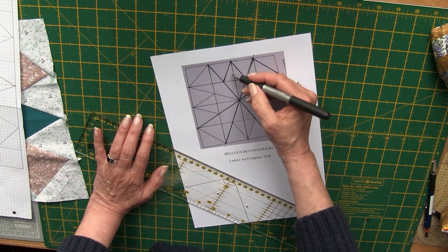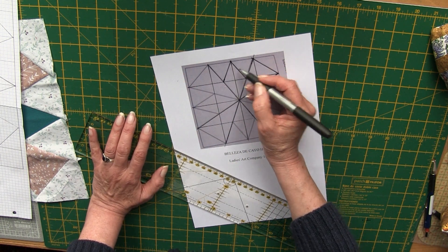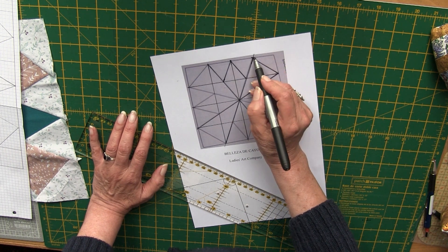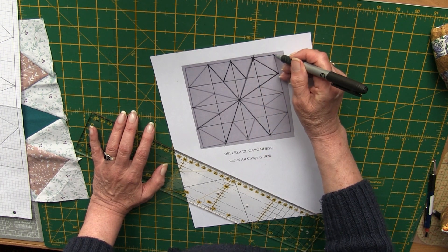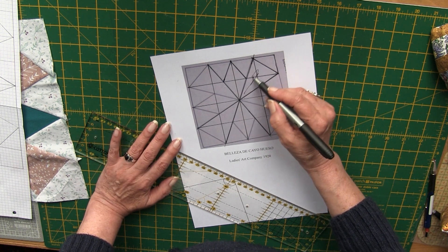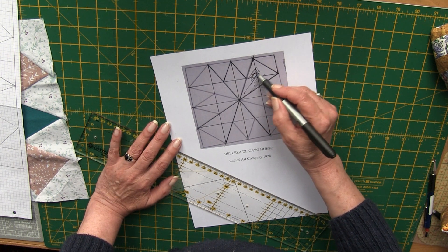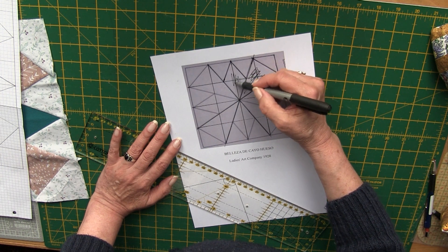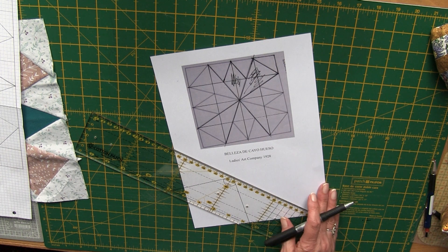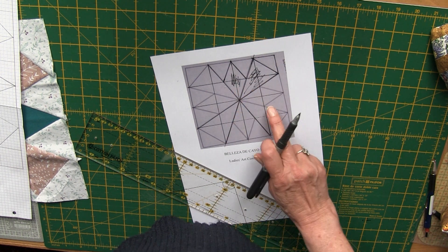Y ya nos queda este triángulo, que van a ser los 4 triángulos con las puntas encontradas más grandes. Entonces vamos a hacer este otro triángulo, que es de la punta de aquí al segundo cuadro. Y de esta punta a este otro segundo cuadro. Ya tenemos formado el rombo, los dos triángulos, el triángulo de la esquina y el triángulo grande.